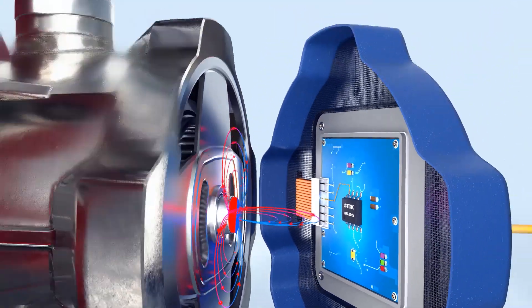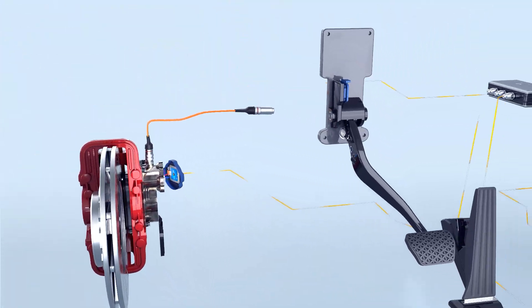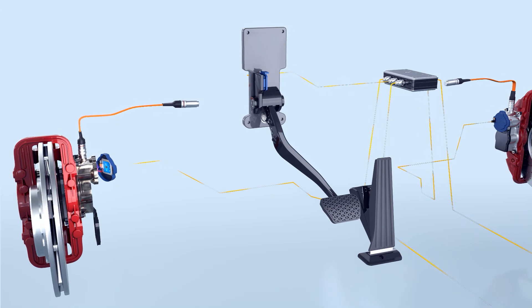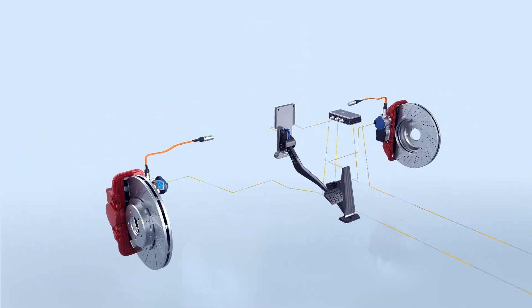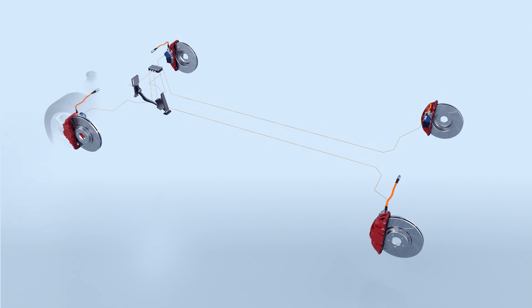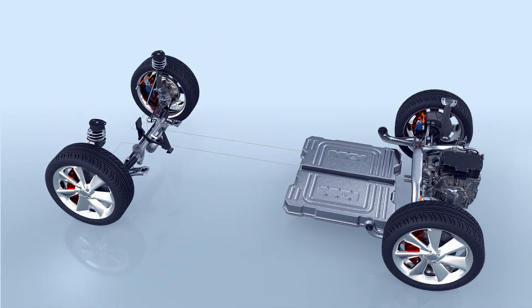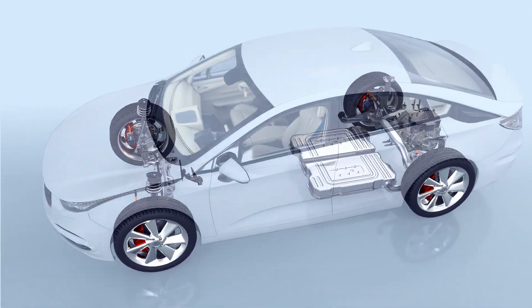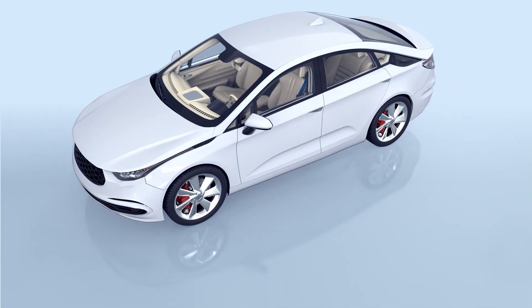HAR3021 and HAR3930 demonstrate their advantages, such as precise position measurement, simple magnetic integration, versatile interface options and unique stray field compensation. These features make them reliable and valuable components in modern electromechanical brake systems, ensuring both safety and performance.